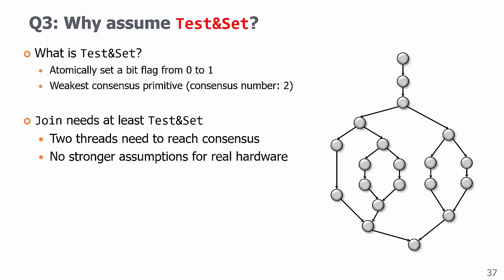So here from a practical point of view, we do not make stronger assumptions for real hardware as compared to the basic binary fork join model. Namely, any machine that supports the binary fork join model also supports the binary forking model. And of course, real architecture does support test and set.